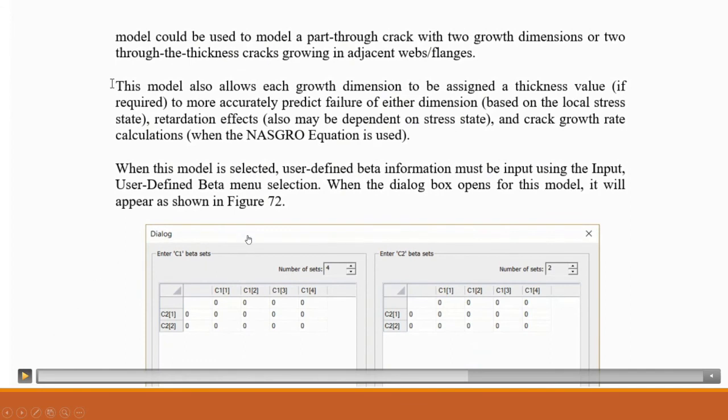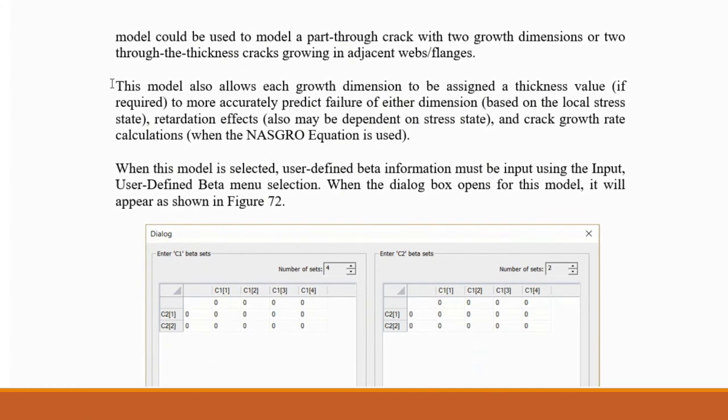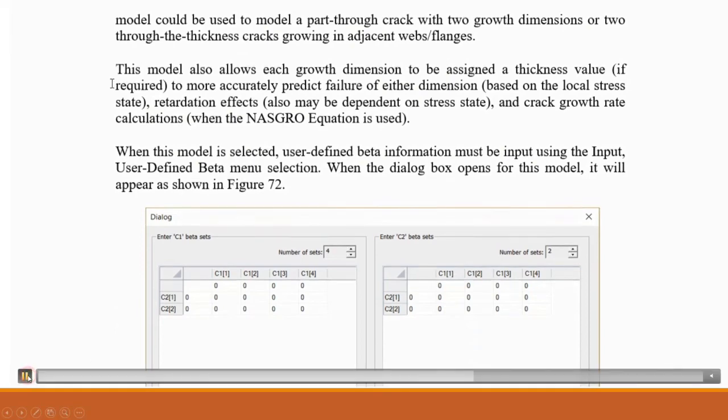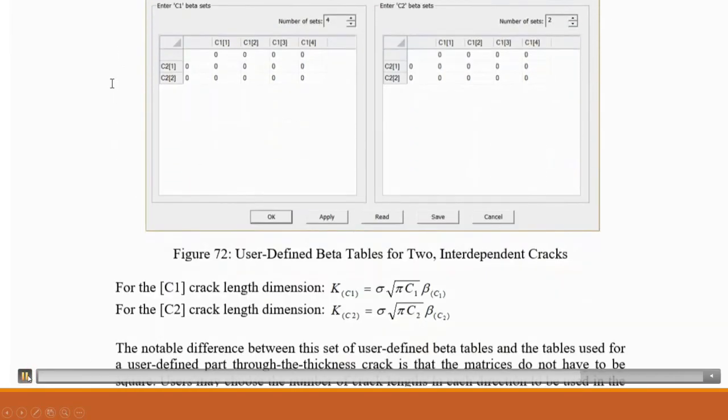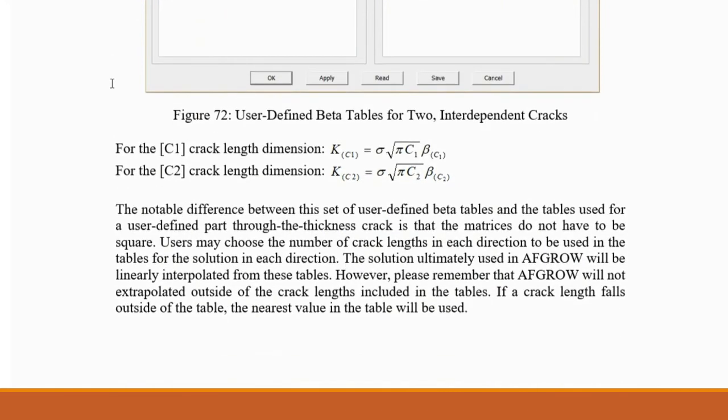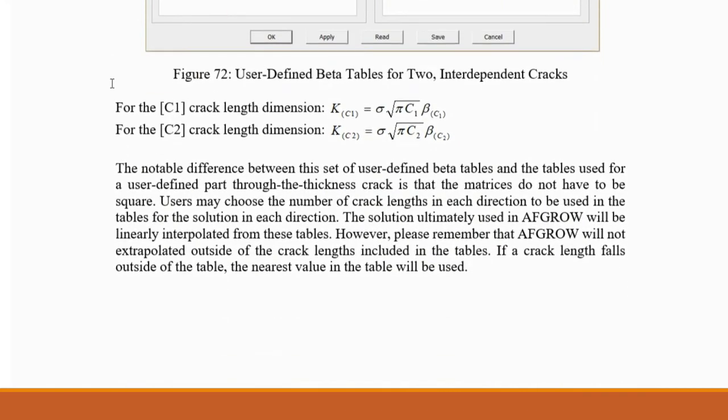Here's what the user-defined beta dialog looks like for this model. The difference between this table and the user-defined beta tables for the part through the thickness cracks is that the matrices do not have to be square. Users may choose the number of crack lengths in each direction to be used in a table for the solution in each direction.